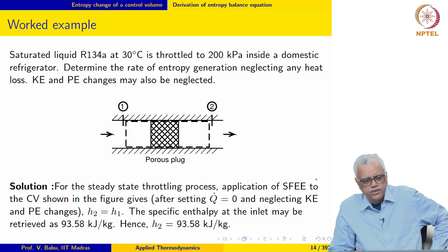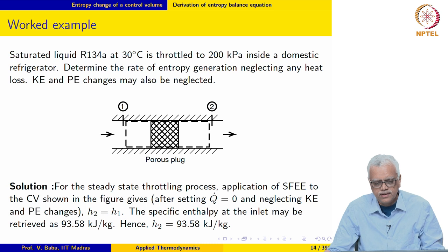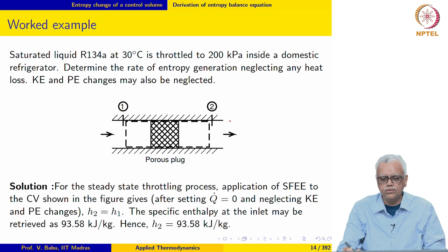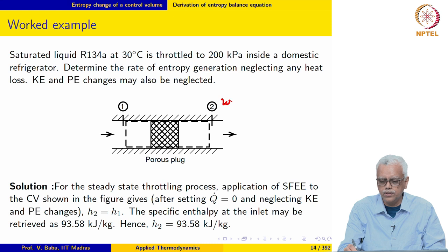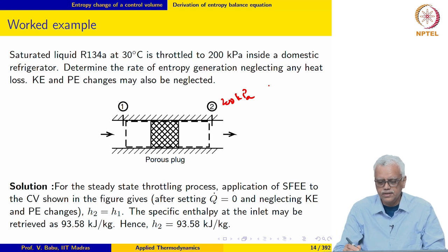The next example is: saturated liquid R-134A at 30°C is throttled to 200 kPa inside a domestic refrigerator. The exit pressure is 200 kPa. Determine the rate of entropy generation, neglecting any heat loss; kinetic and potential energy changes may also be neglected.